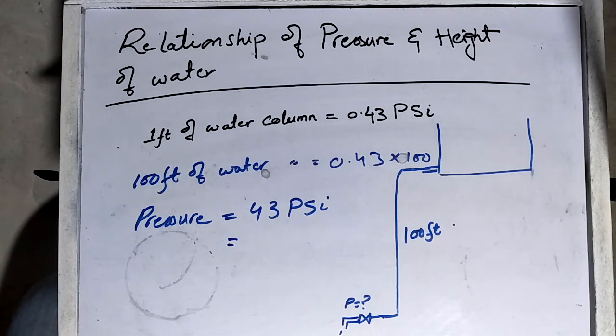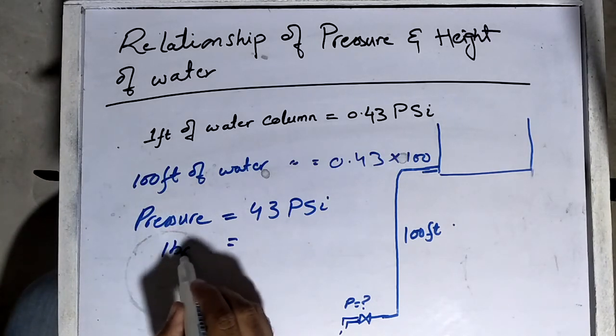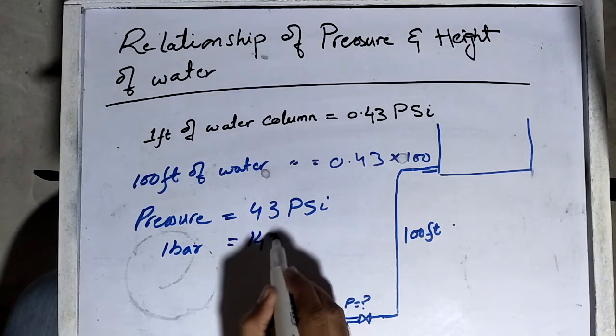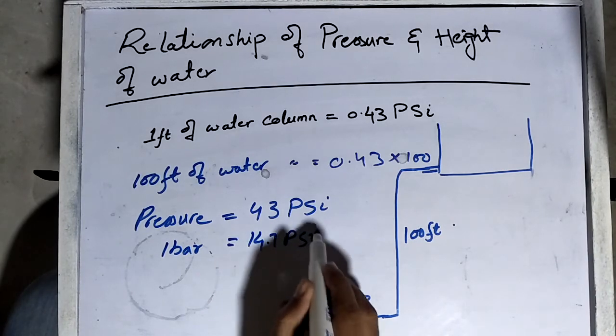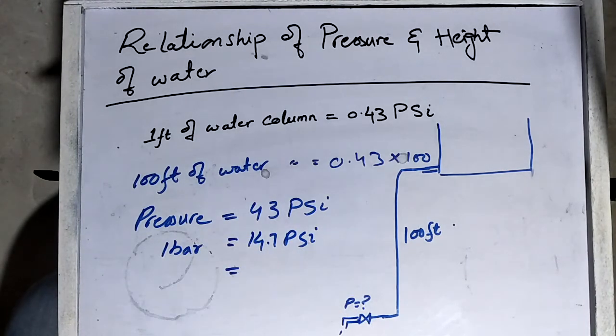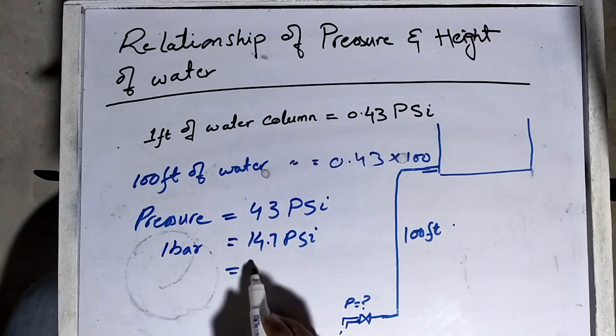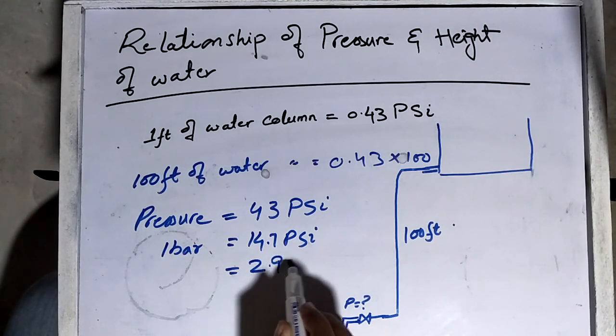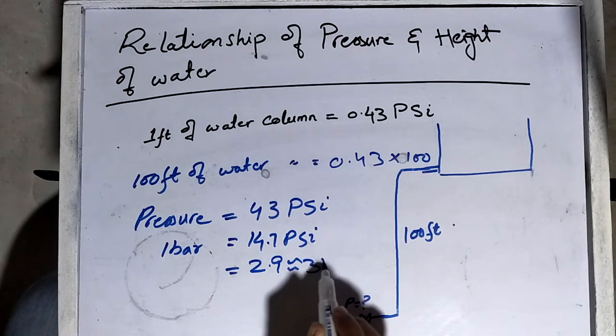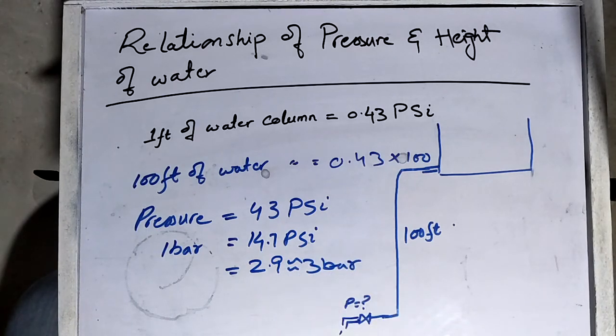We know that one bar is equal to 14.7 PSI. So by converting to bar, we need to divide 43 by 14.7. So we get a pressure of 2.9, approximately 3 bar at the tap level.